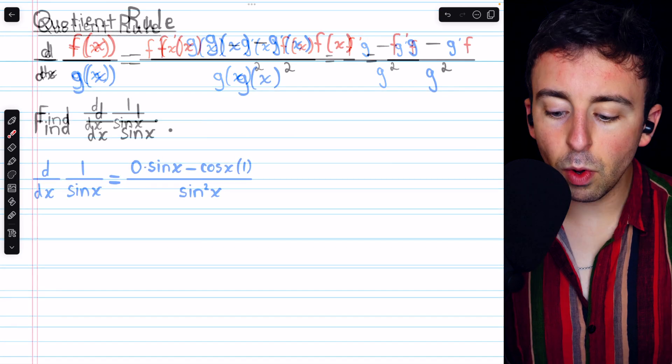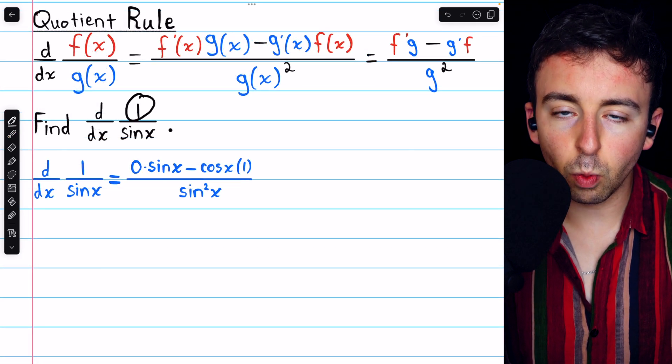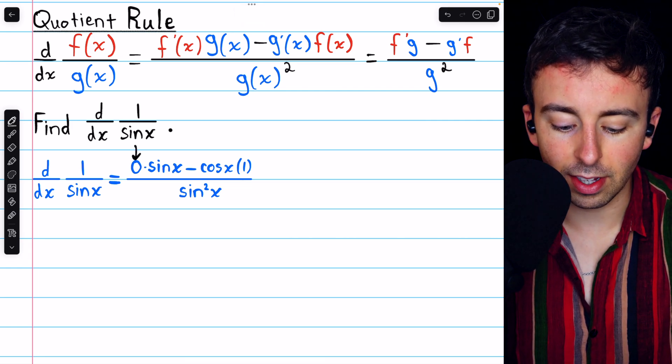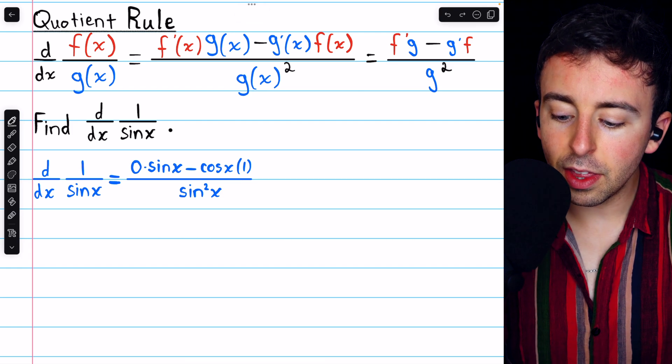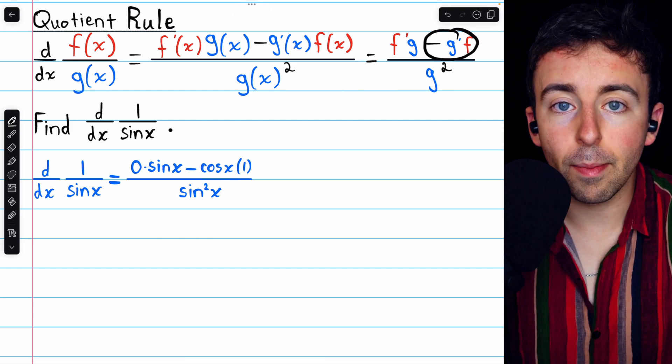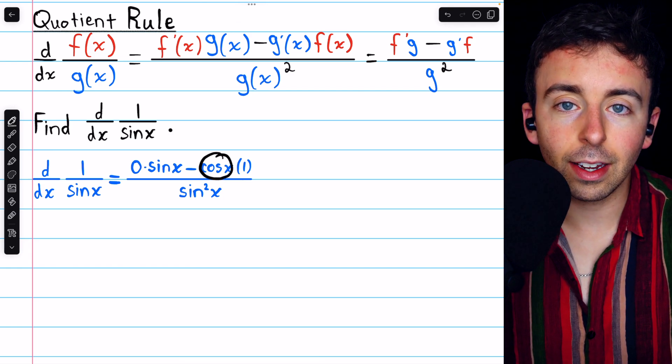So let's go ahead and apply the rule. We begin with f prime g in the numerator. Since f is 1, f prime is 0, which we see there, and then multiply that by g, which is sine x. Then we have to subtract g prime f. Since g is sine x, g prime is cosine x.